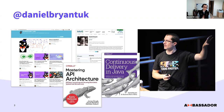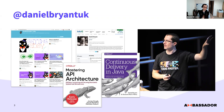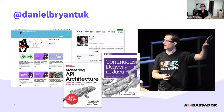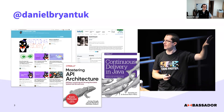Quickly, this is me — Daniel Bryant UK on most of the interwebs: Twitter, GitHub, LinkedIn. My background is Java development, moved through to software architecture, ops, and now more DevRel. I've written a couple of books: Continuous Delivery in Java, and currently writing Mastering API Architecture. My co-authors on both books are from the LJC — the London Java Community — which has been a massive inflection point in my career.